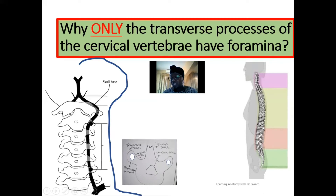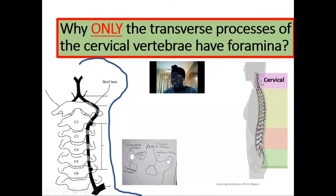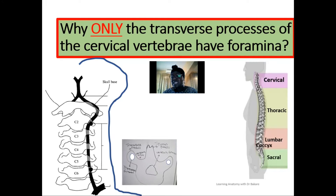We have a bony extension seen at the inferior part of the skull. We have small pieces of bones arranged one on top of each other — these are called the vertebral bones. In the neck region we have the cervical vertebra, distal to that we have the thoracic vertebra seen around the thorax, then inferior to that we have the lumbar vertebra, the sacrum, then the coccyx, which is the distal tail region of the vertebral column.